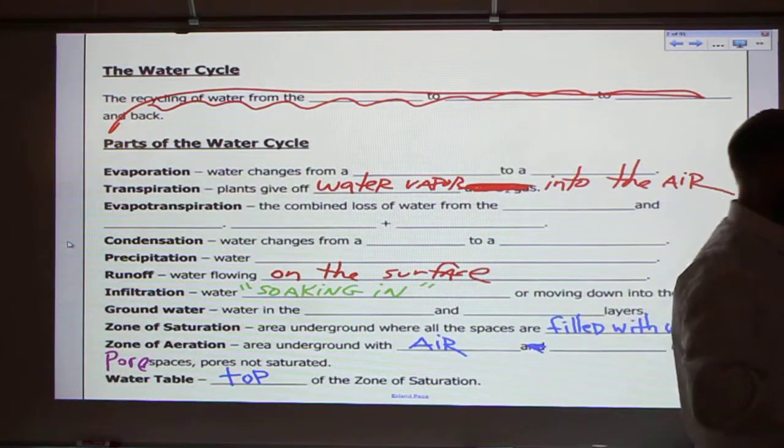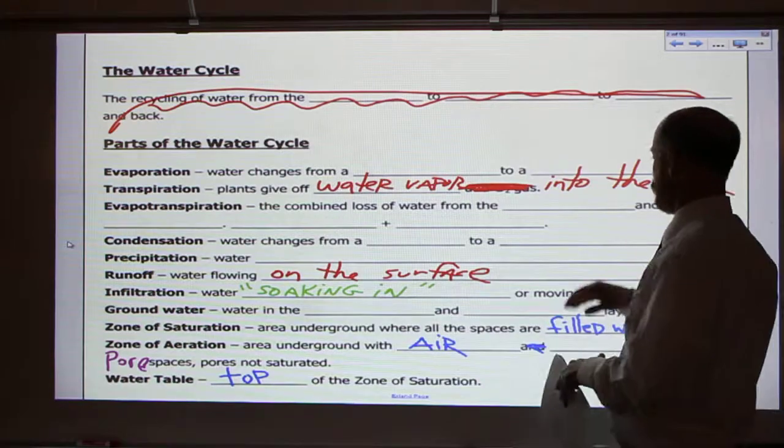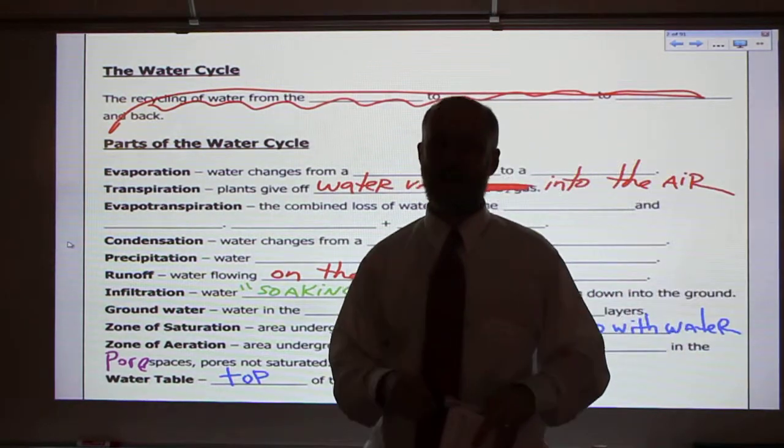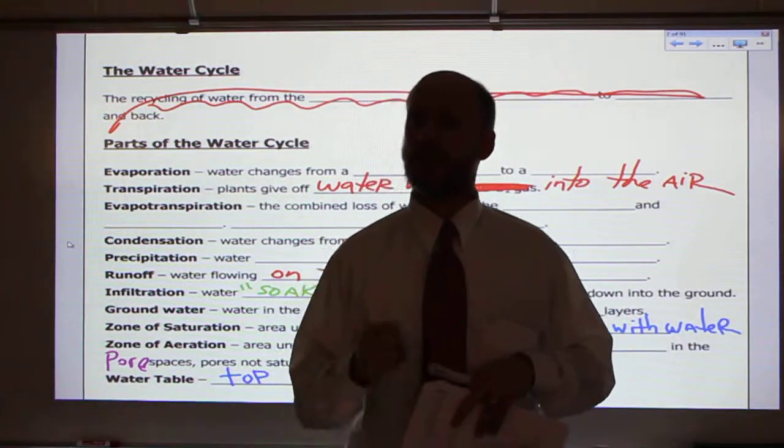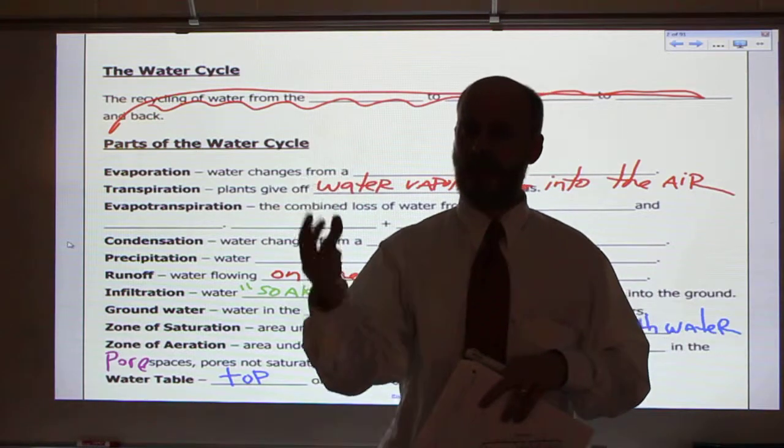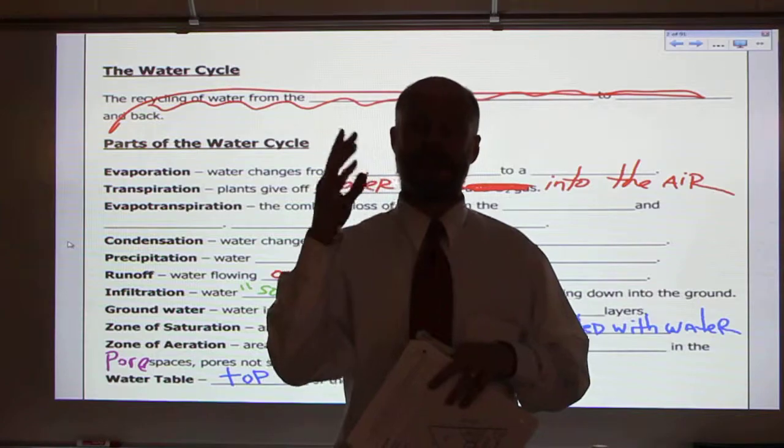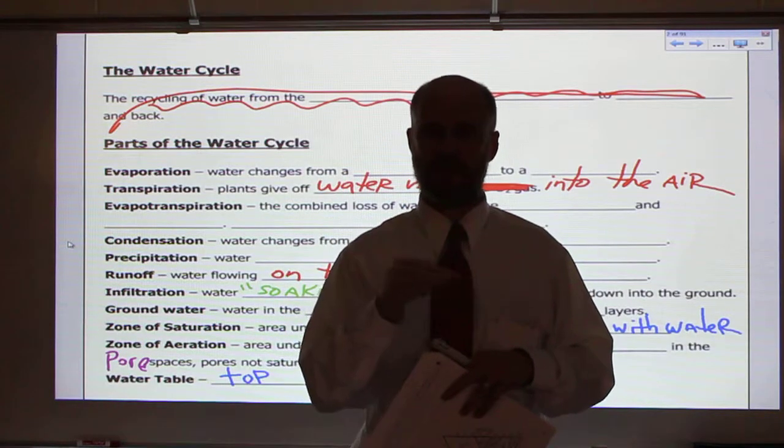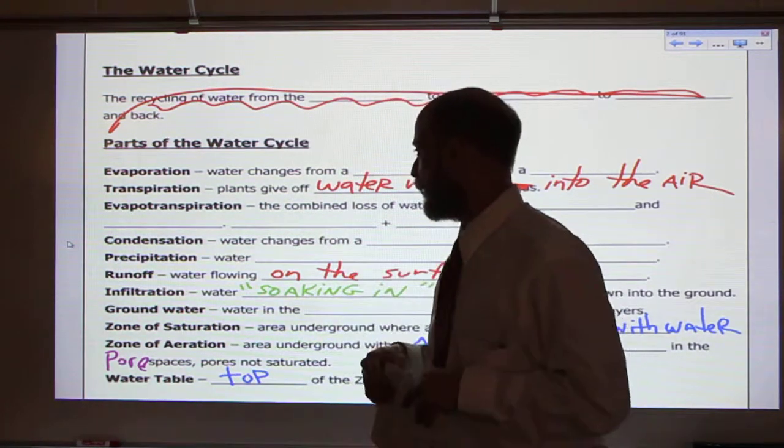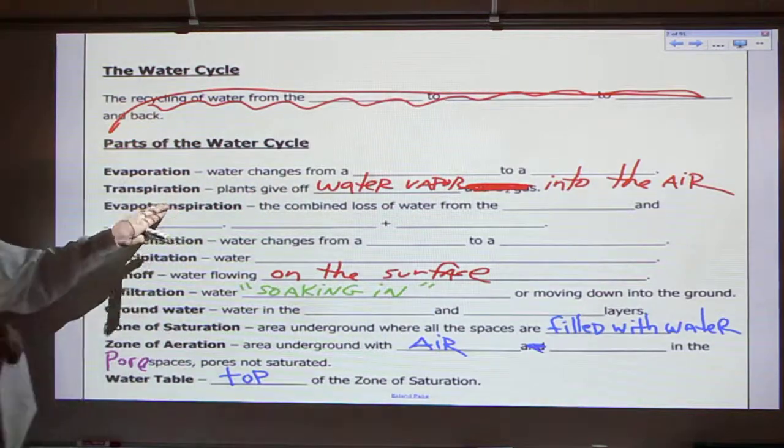So some things that may be new to you. Transpiration is when plants give off water vapor into the air. You don't think about the leaves of plants giving off water vapor into the air. It's called transpiration, so the total way that water vapor gets into the air is evaporation and transpiration. This is called evapotranspiration. That word is right here.